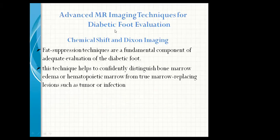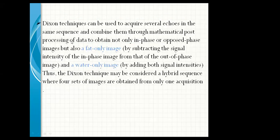Advanced MRI imaging techniques for diabetic foot evaluation: chemical shift and Dixon imaging. Fat suppression techniques are a fundamental component of adequate evaluation of the diabetic foot. This technique helps to confidently distinguish bone marrow edema or hematopoietic marrow from true marrow-replacing lesions such as a tumor or infection. The Dixon technique acquires several echoes in the same sequence and combines them through mathematical post-processing to obtain in-phase and out-of-phase images, fat-only images, and water-only images. Thus, the Dixon technique may be considered a hybrid sequence where four sets of images are obtained from only one acquisition.